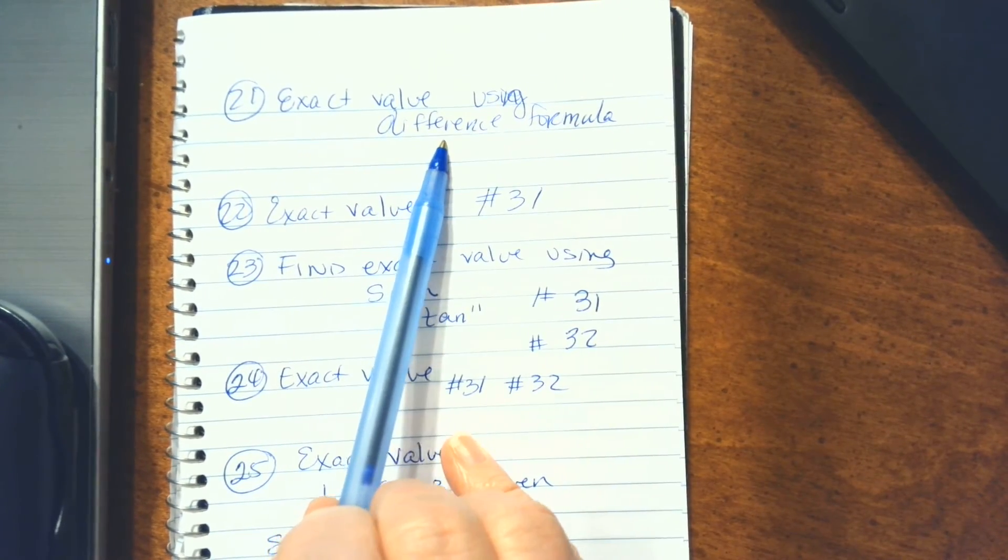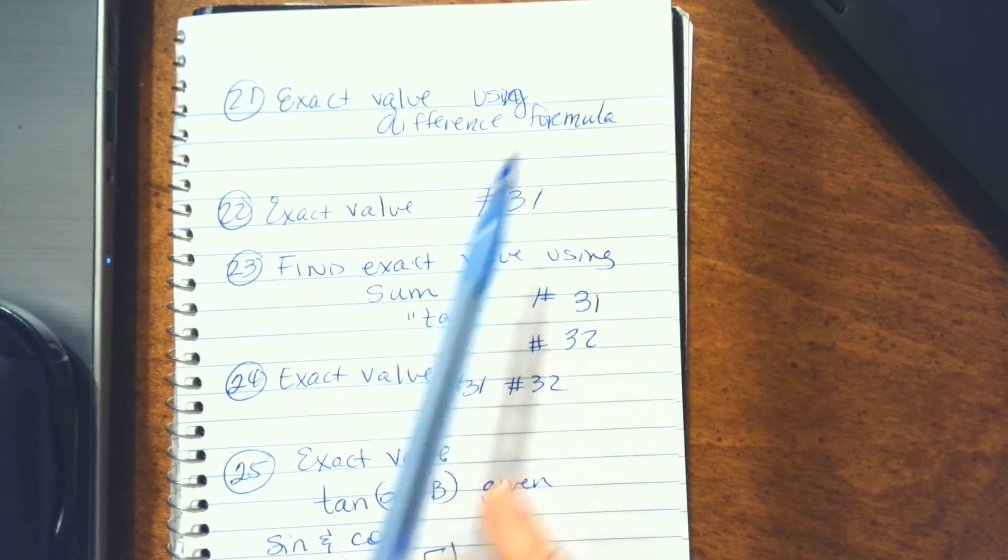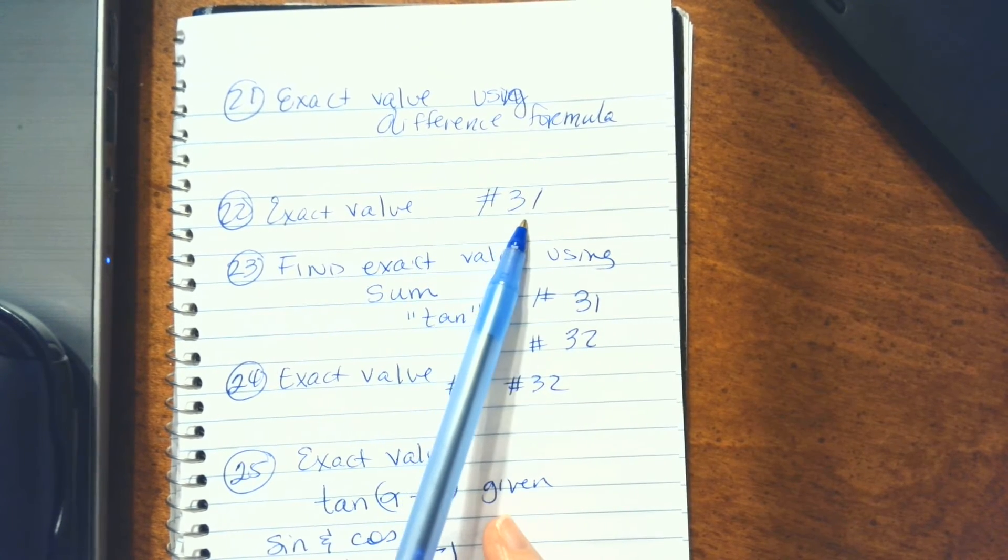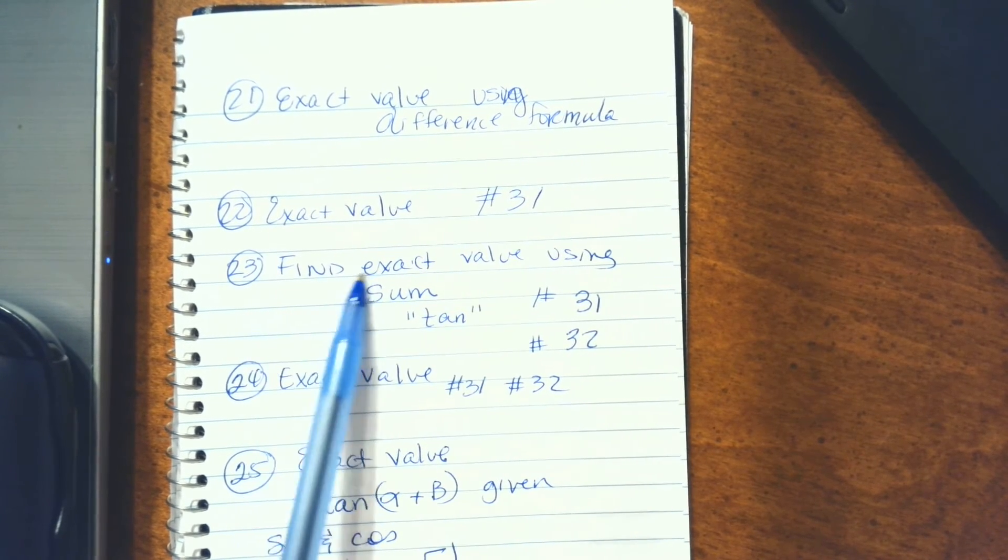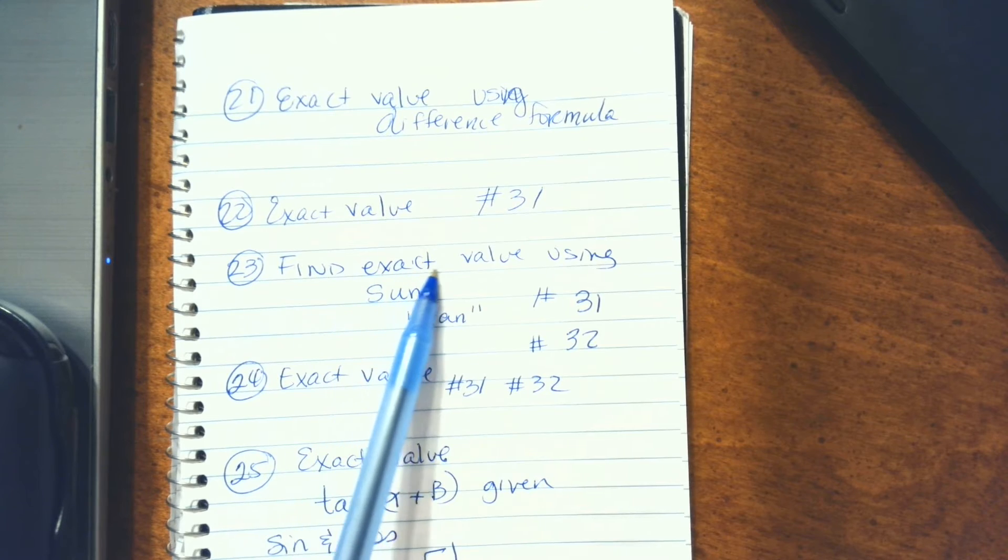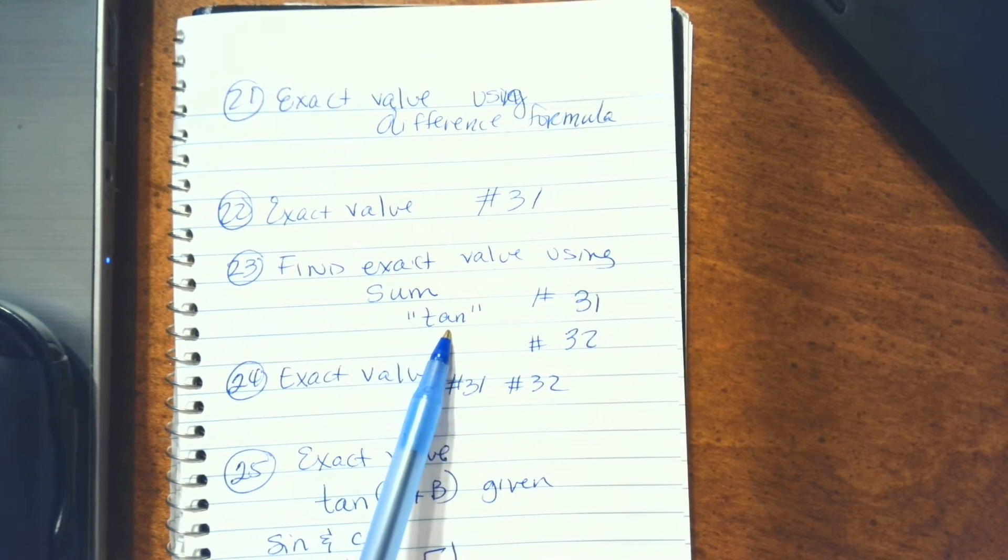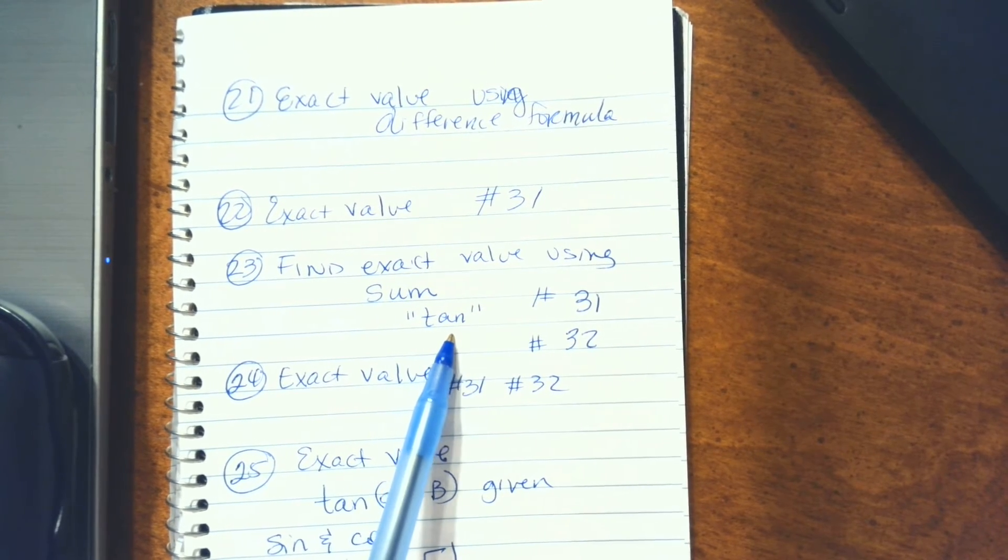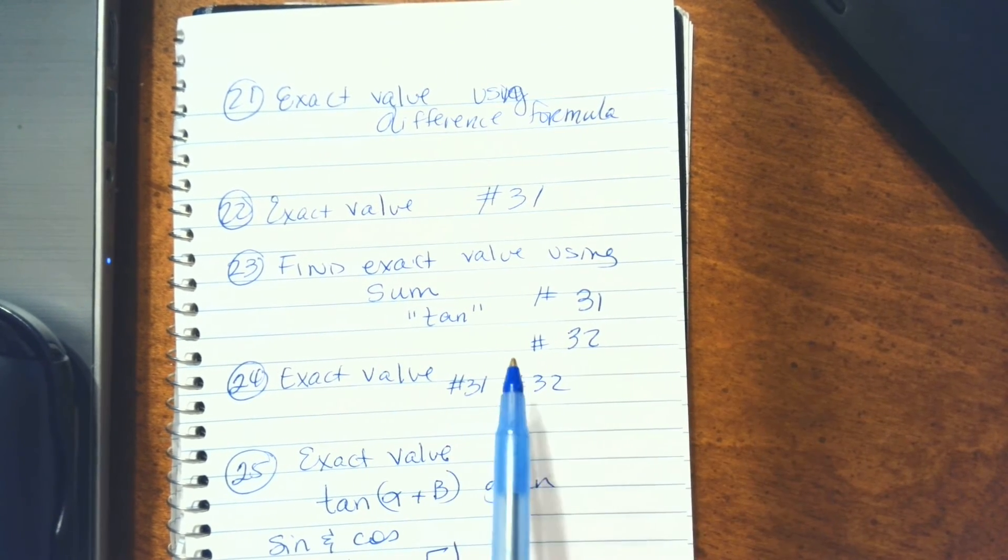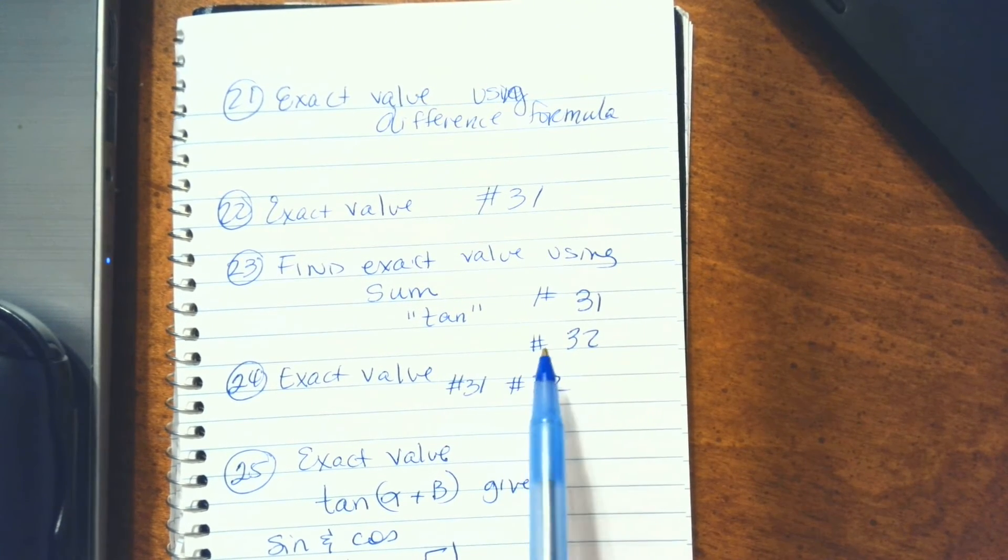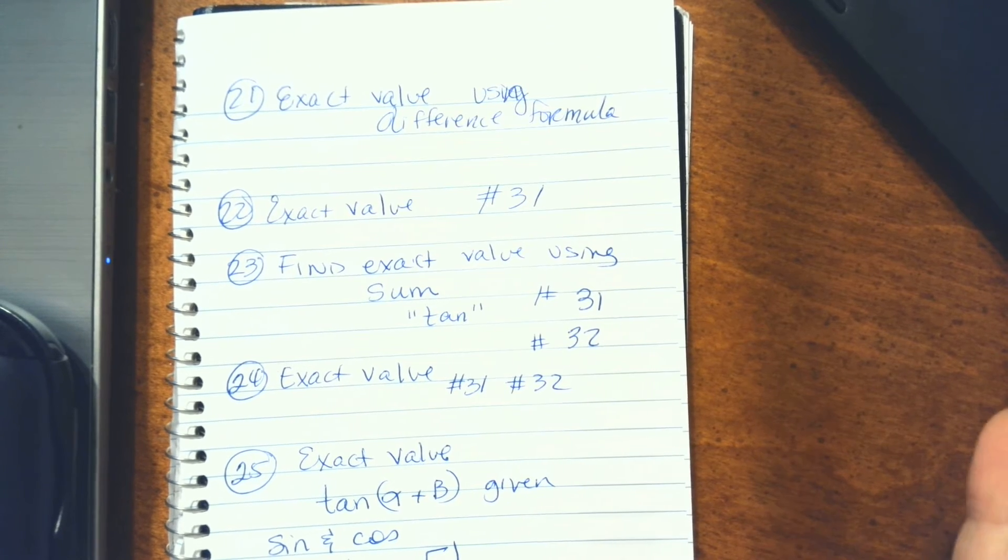21 is an exact value using the difference formula. 22 is exact value similar to number 31. 23 says find the exact value using the sum, and I'll go ahead and tell you that's going to deal with the tangent, so be sure you have those notes and study guide handy.